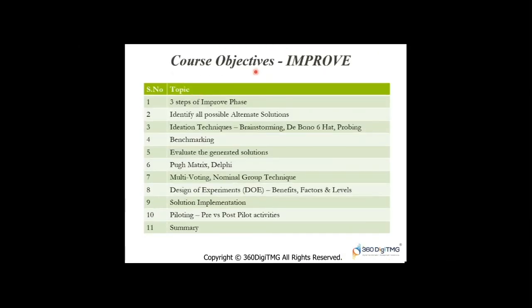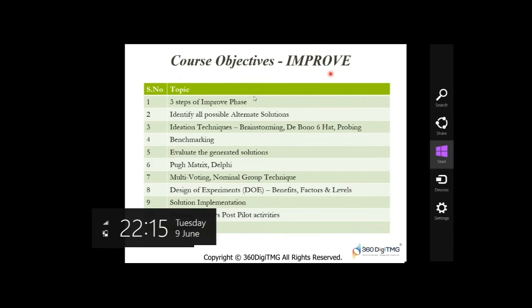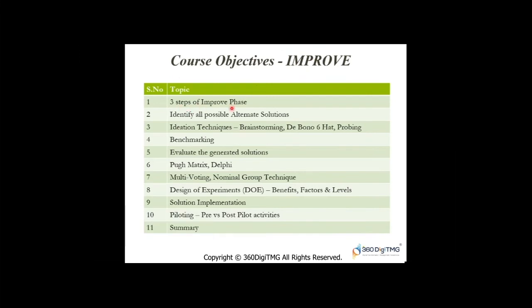Let us understand the course objectives for the Improve Phase. We are going to discuss the three steps of the Improve Phase, identify all possible alternate solutions, and discuss Ideation Techniques — Brainstorming, De Bono 6 Hat Thinking, Probing. We will also discuss Benchmarking: Strategic Benchmarking, Process Benchmarking, and others.